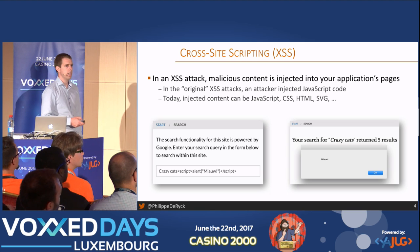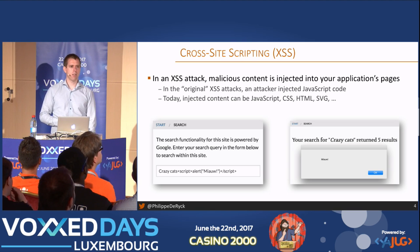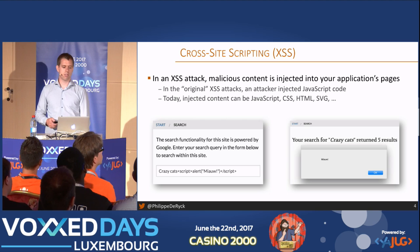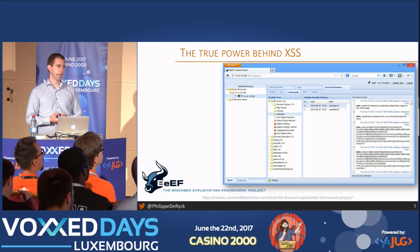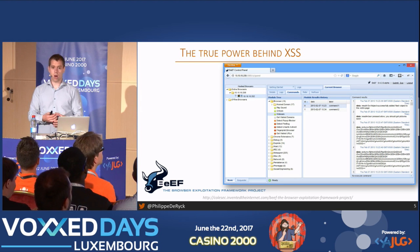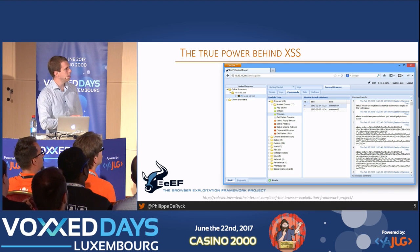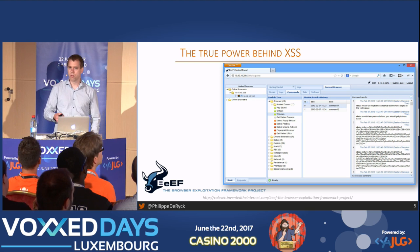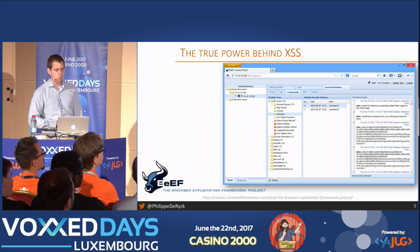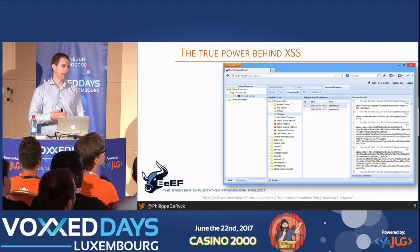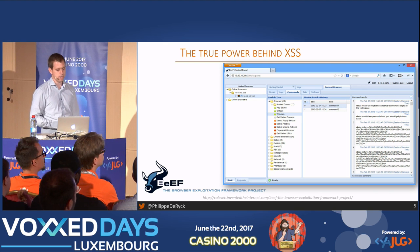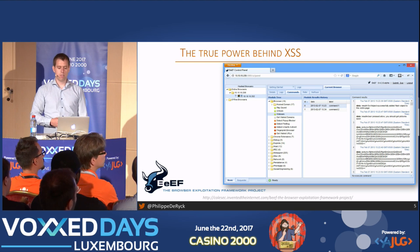Cross-site scripting is often shown with a pop-up alert dialogue — a proof of concept. But once you can do that, you can do anything within the context of the page. There's a framework called BEEF, the Browser Exploitation Framework, that lets you insert a small piece of JavaScript through a cross-site scripting attack, and then the browser connects back to a command center. They have around 300 modules you can execute in the user's browser — grabbing webcam images, screenshots, injecting fake flash updates. Cross-site scripting is definitely very dangerous.